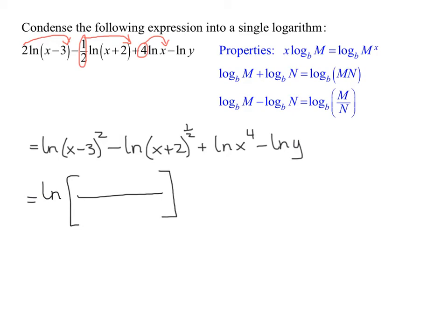The first term has plus one in front, so x minus three squared goes in the numerator. The next has minus one, so x plus two to the one half power goes in the denominator.